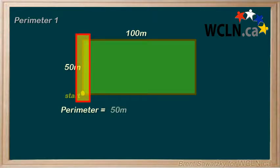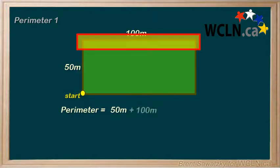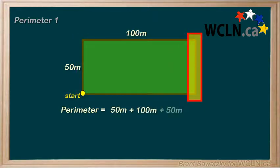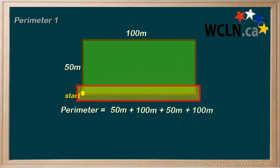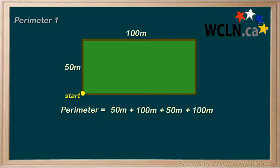So you could simply say, I ran 50 meters, and then 100 meters, and then another 50 meters, and then the last 100 meters, bringing me back to the start. And I add them all together, and I have a distance that I ran that is 300 meters. That's the perimeter of the field.